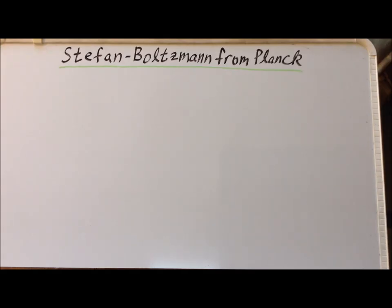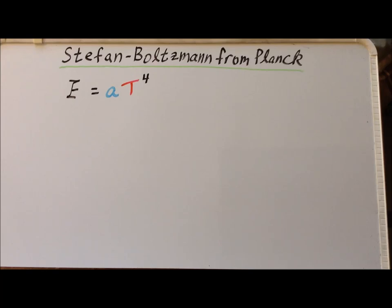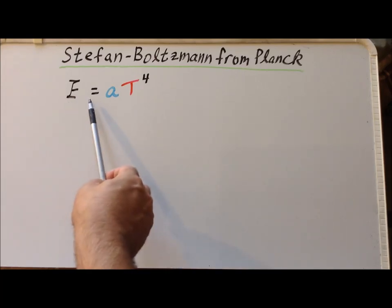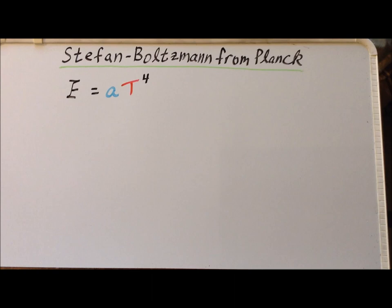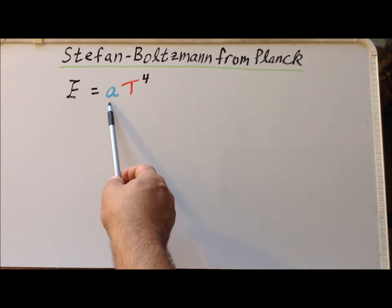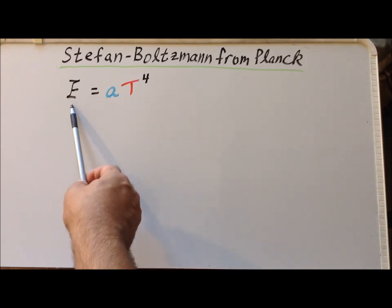Hello. In this video, we are going to derive the Stefan-Boltzmann relationship from the Planck distribution. The Stefan-Boltzmann law can be written as E equals aT to the fourth power, where E is the emissivity, the energy output of a black body, a is a constant, and T is thermodynamic temperature. The important thing is that the energy output depends upon the fourth power of the temperature.